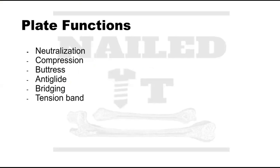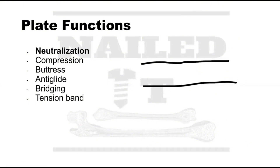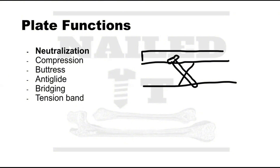Let's talk about plates used in neutralization mode. We have a fracture with an oblique line, and we fix the primary fracture line with a screw going perpendicular to the fracture to get nice compression across that line. This construct is stable in an axial plane, but if you try to twist both ends of the bone, it's not going to be stable to torsional forces.